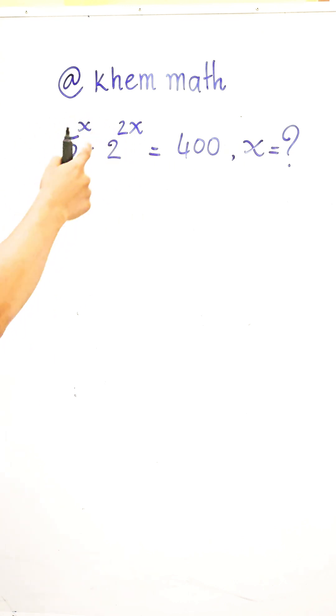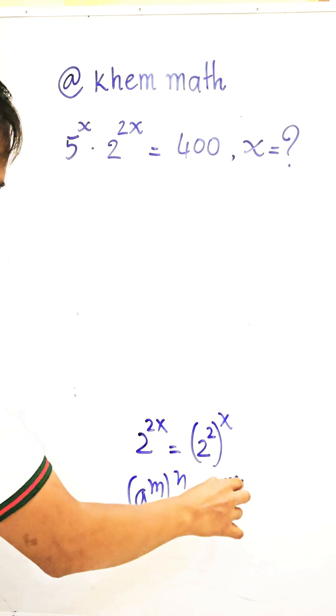So the first step, you see this 2 power 2x can be written as 2 power 2 all power x. Let me use the formula: if a power m all power n is equal to a power m times n.